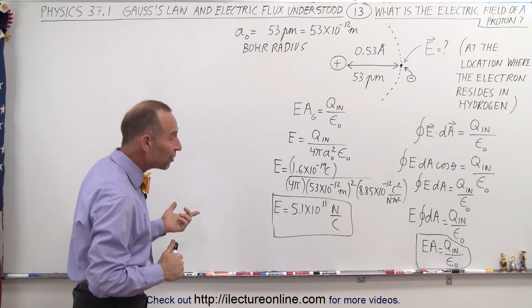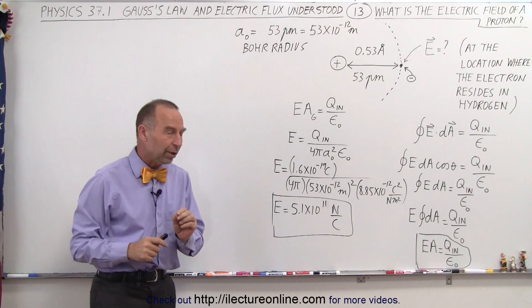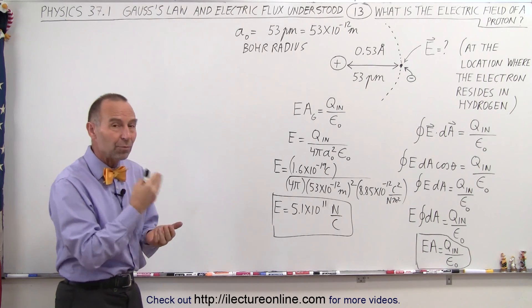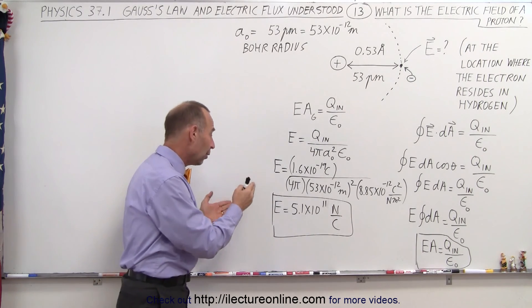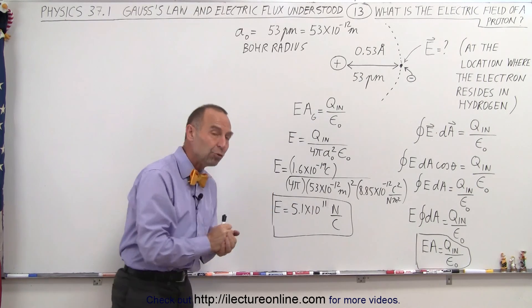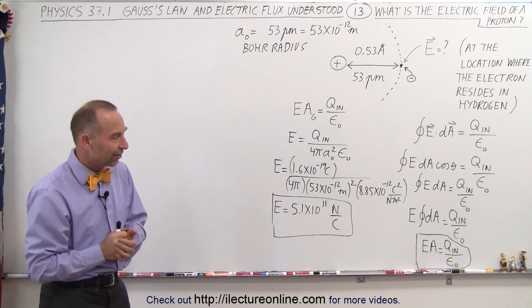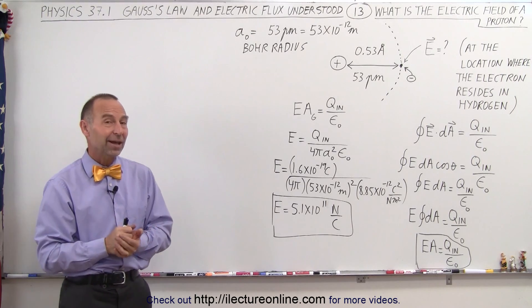So in the next video, we're going to explore this a little bit more, and we're going to figure out how fast the electron has to move in order to stay in orbit around the proton, where we have this enormous electric field at that distance. That's how it works.